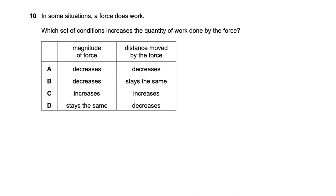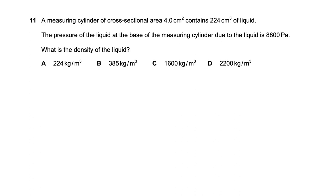Question ten asks which set of conditions increases work done by a force. Work done equals force times distance, so work done is directly proportional to both force and distance. Both must increase for work done to increase. Only option C shows both increasing, so option C is the right answer.